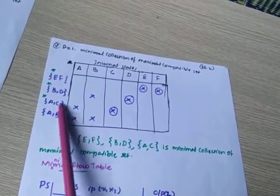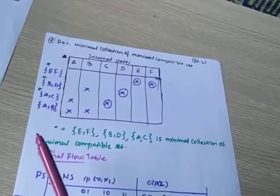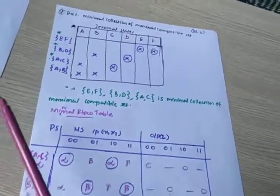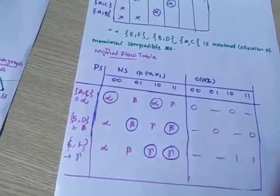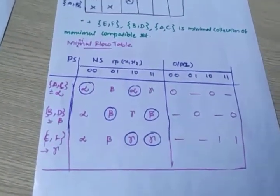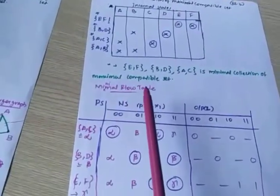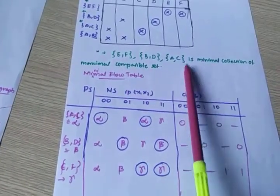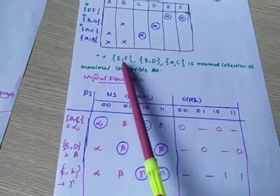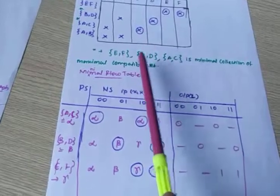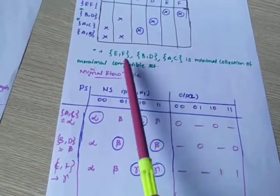Here we eliminate {A,B}. This is the procedure. Next is the minimal flow table — how to write the minimal flow table. These are the minimal collection of maximal compatible sets, so assign these sets to a new notation.